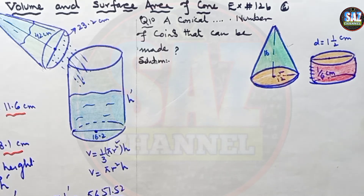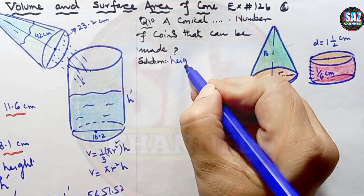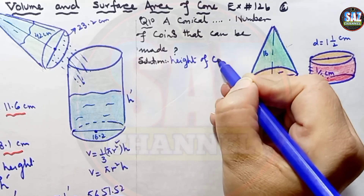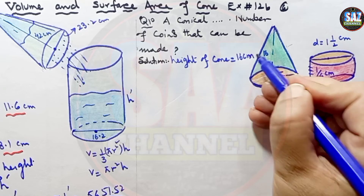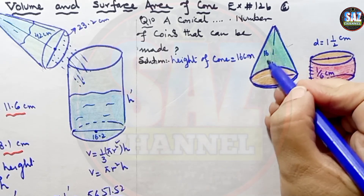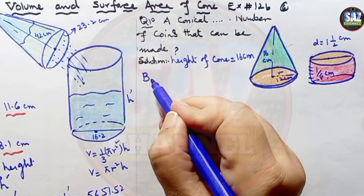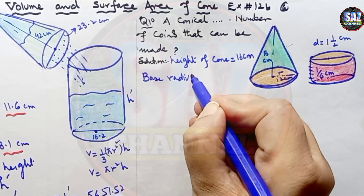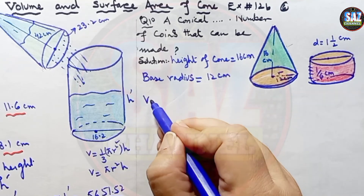Let's move to the solution and begin with the information of the cone. The height of the cone is 16 cm and the base radius is 12 cm.